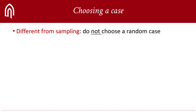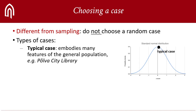You might still want to select a typical case — that is to say, a case that shares many features with what is currently known about the overall population. For example, if you're doing a case study on digital technology use in Estonian libraries, a typical case would probably be a medium-sized library in a medium-sized Estonian town: not too big, not too small, not too popular, not nearly disused, not overly advanced, and not terribly lagging behind.